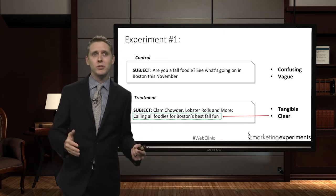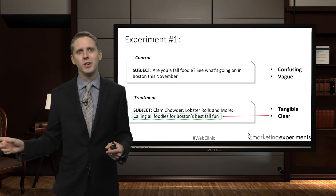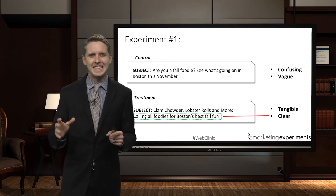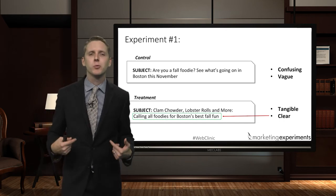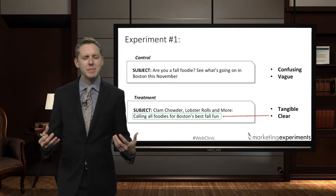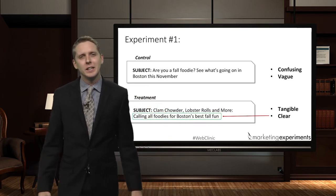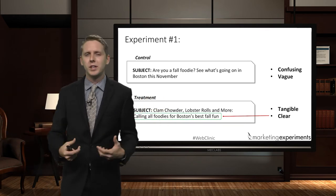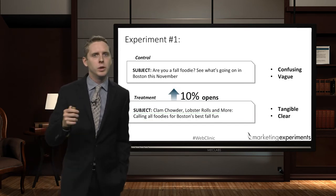We still used the word 'foodie,' but we didn't lead with it. And instead of saying 'November,' we connected to 'fall.' Think about the power of the word 'fall' versus 'November.' What tangible imagery does 'fall' draw out of you? You think of the leaves, the colors, the temperature, the smells — all valuable things associated with the fall. That imagery contributed to a 10% increase in opens.